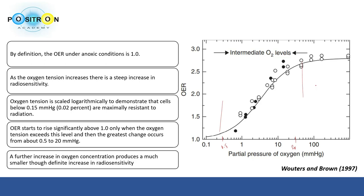The partial pressure axis is plotted on a logarithmic scale to better demonstrate cells with very low oxygen levels. Cells that have a partial pressure below 0.15 mmHg have an OER equal to 1, meaning they are maximally resistant to radiation.